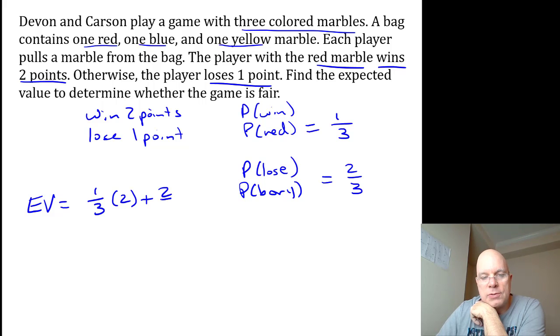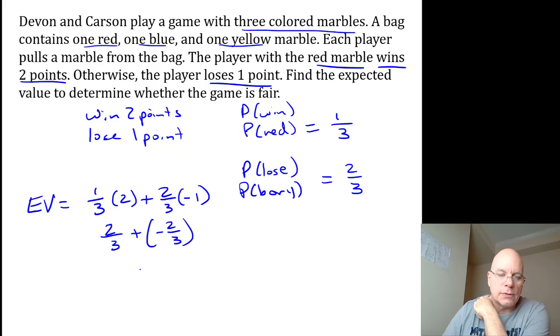And there's a two-thirds probability of losing one point, so we represent losing one point as negative one. When we multiply these we get one-third times two is two-thirds. Two-thirds times negative one is negative two-thirds. Two-thirds plus negative two-thirds is zero.